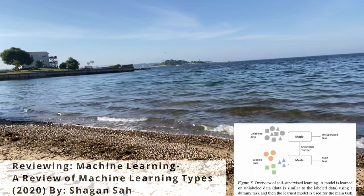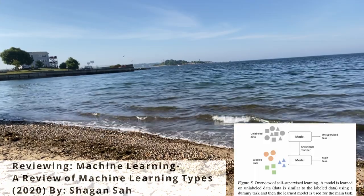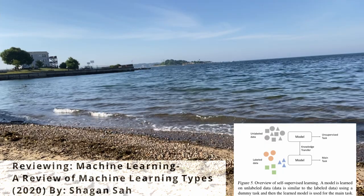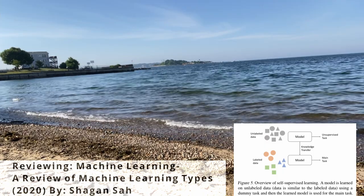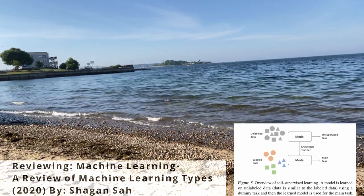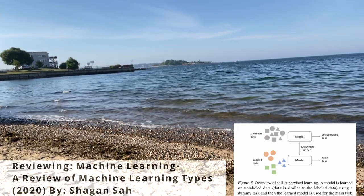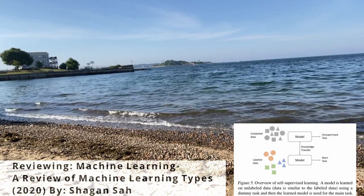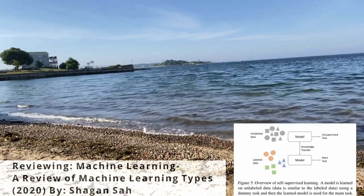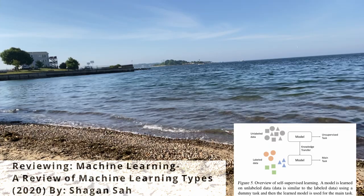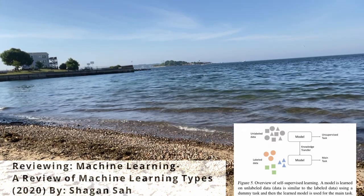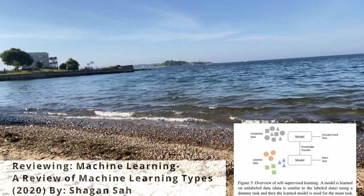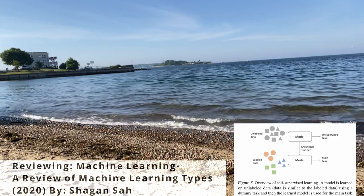Then we have self-supervised learning. This is more commonly known as neural networks or deep learning, and it's essentially giving the machine pre-trained models, but those models are not necessarily labeled and it itself learns based on semantic similarities.